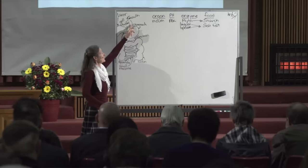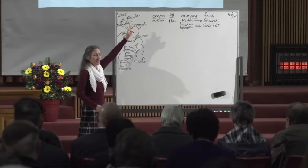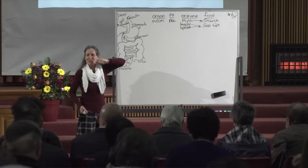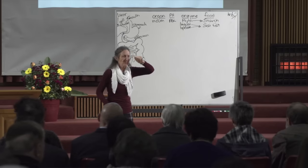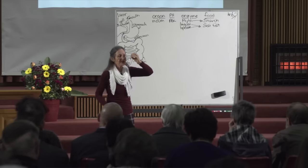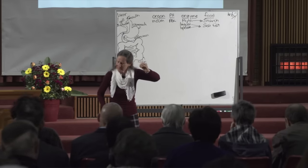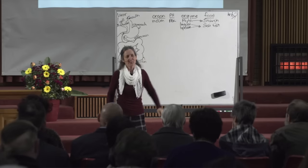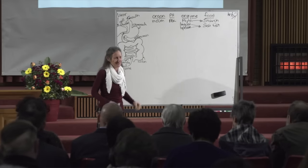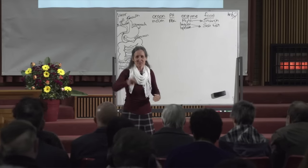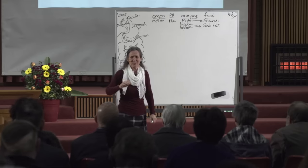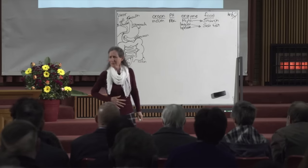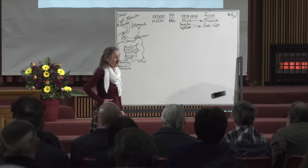Now let's move down to the esophagus. Before we do — there are exposed bones in your mouth called teeth, and their purpose is to break food into very tiny particles. I was at a restaurant one day and the lady across from me did about two chews then swallowed. Two chews, swallow. I thought — the poor stomach. The poor organs down there have no idea what's coming, because there are no teeth in the stomach.